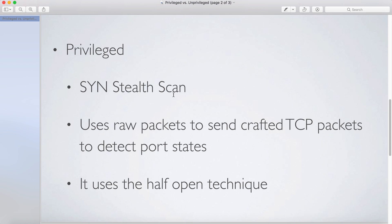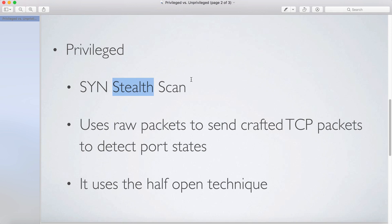Running as a root or privileged user allows you to create raw packets, but unprivileged does not. With these raw packets you can create half-open connections — it uses the half-open technique, which means you don't complete the TCP three-way handshake. The three-way handshake is: you send a SYN, the target machine sends a SYN-ACK back, and you send an ACK. Most logging systems log this and it can be detected, so with the half-open technique there's a chance you might not get detected because logging systems might not be configured to log these kinds of connections.